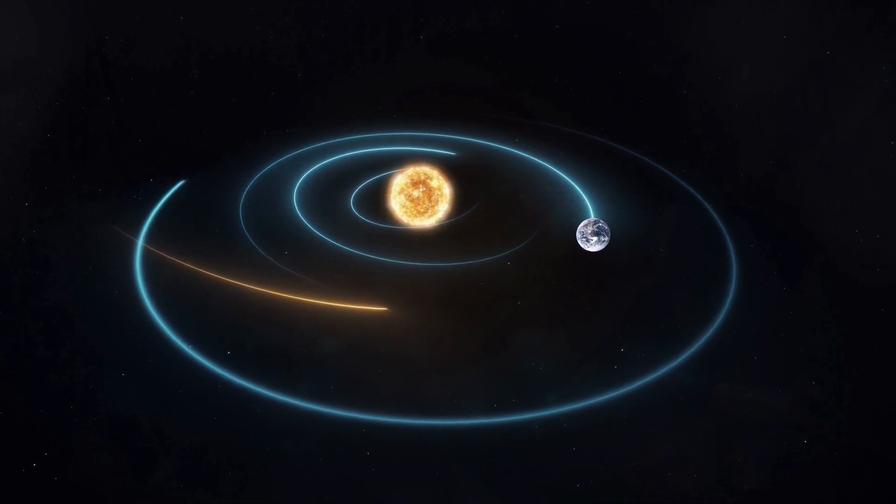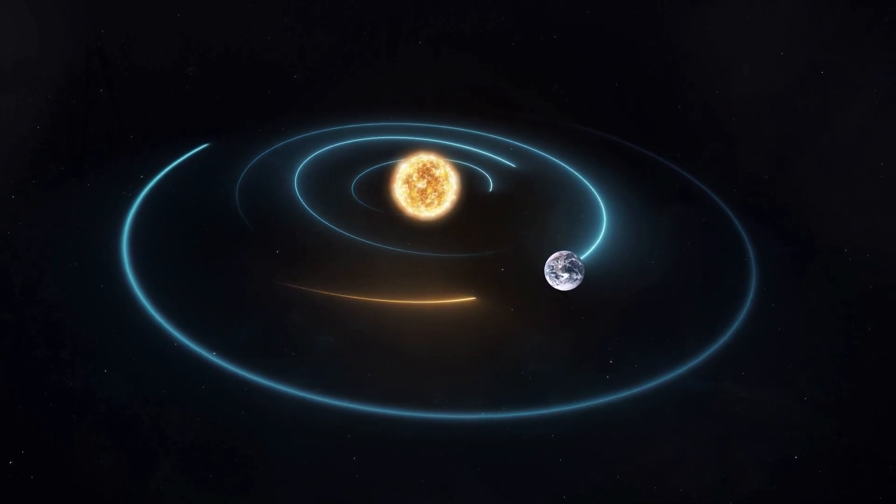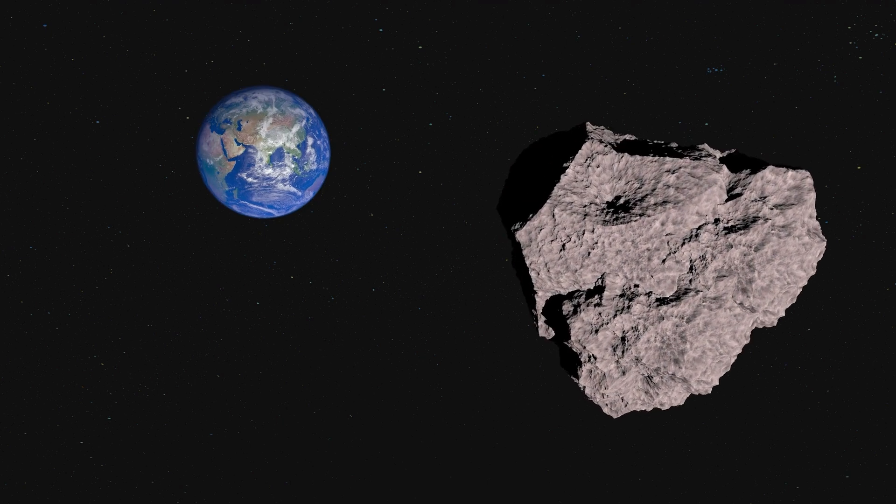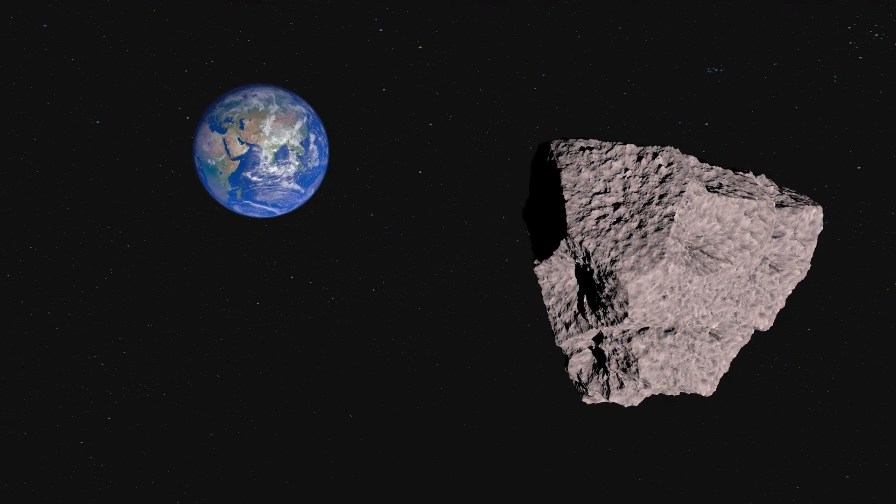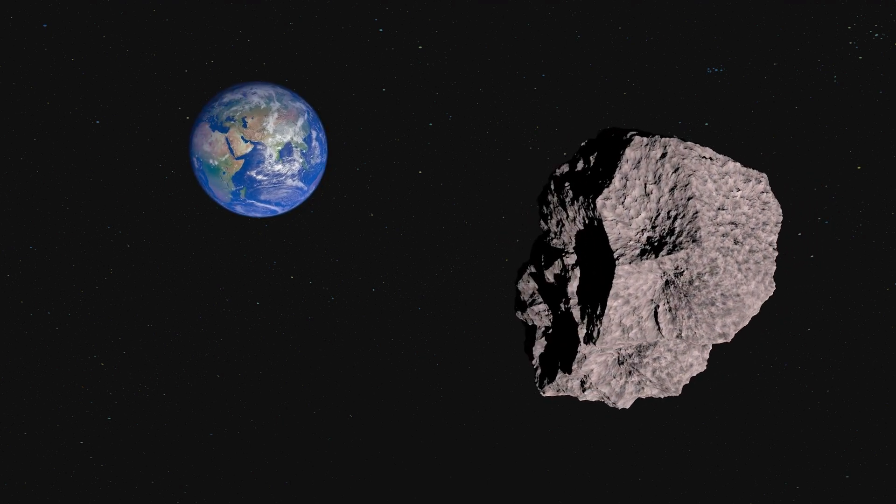This July, a large comet that has reached the inner region of our solar system and is nearing the end of a multi-million year journey towards the Sun will make its closest approach to Earth.